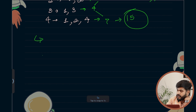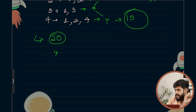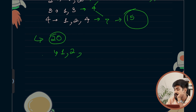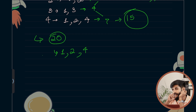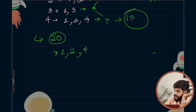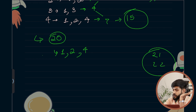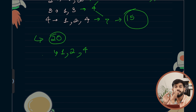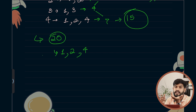The general algorithm to find divisors of, say, 20 is to start from 1. Can 1 divide 20? Yes, so we include it. Can 3 divide 20? No, so we skip it. Can 4 divide 20? Yes, so we include it. We iterate from 1 to 20 because a number greater than 20 can't divide it. Whenever the remainder is 0, that number is a divisor.